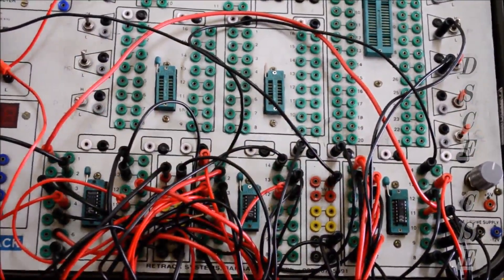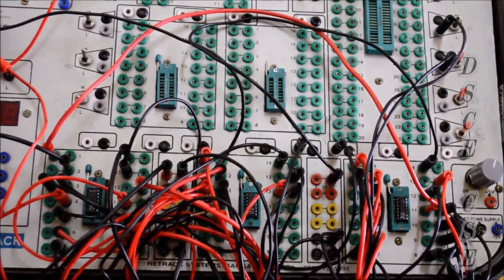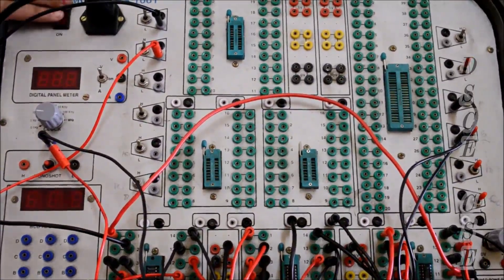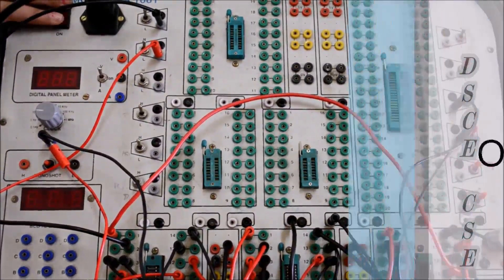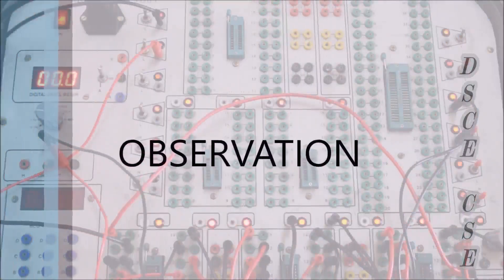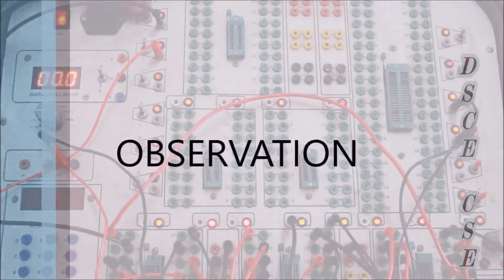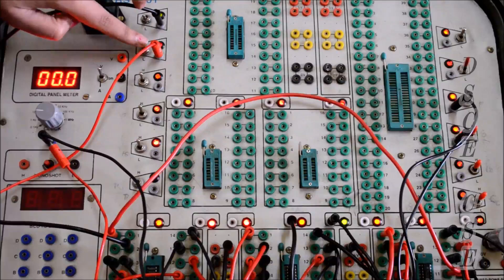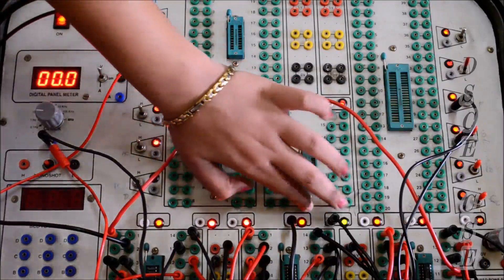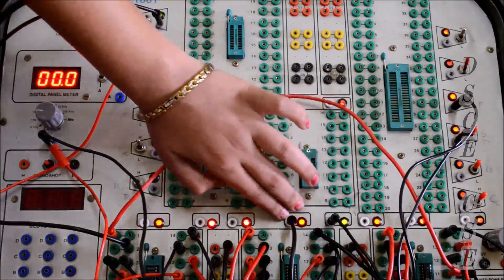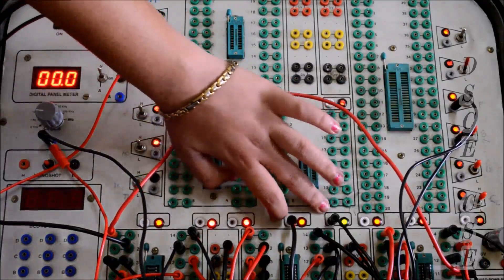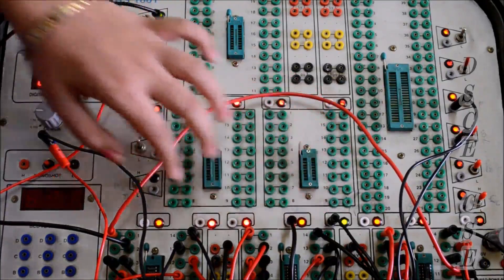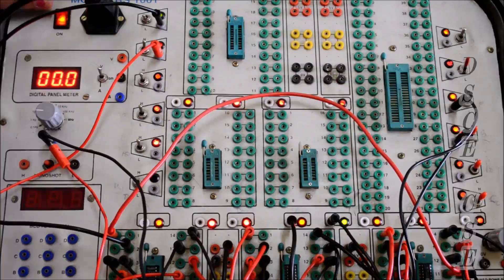This completes both the master and the slave connections. Now that we are done with the connections, we see the output. Switch on the power supply — we set the value of J to zero and the value of K to high. We see that the value of Q-bar is high and the value of Q is low, meaning the flip-flop is in reset condition.